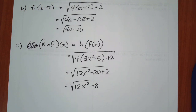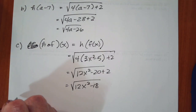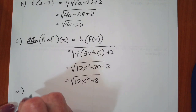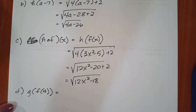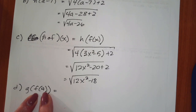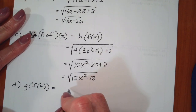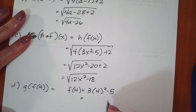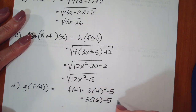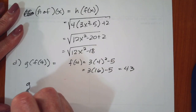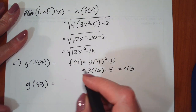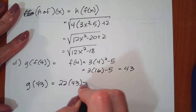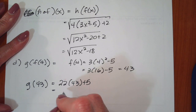Part d asks us for g dot f of 4. What that means is we're going to find f of 4, and whatever that value is, we're going to put it into g. So I'm going to start by finding f of 4, which is 3 times 4 squared minus 5. That gives me 3 times 16 minus 5, that's 48 minus 5, which is 43. So now I want to find g of 43, which gives me 22 times 43 plus 5, which is 951.